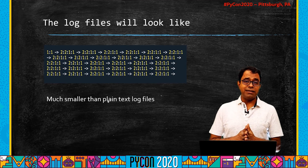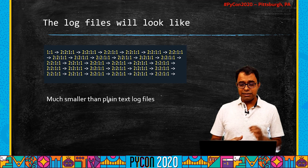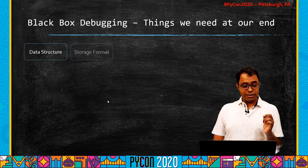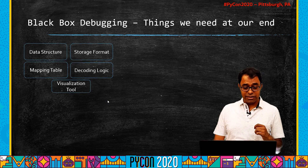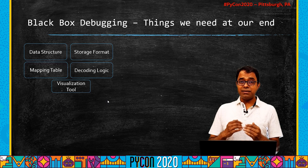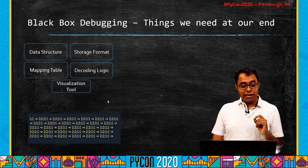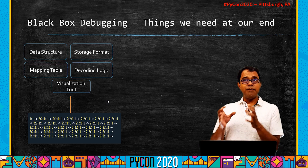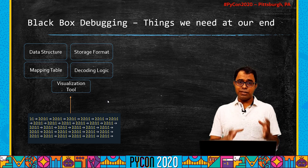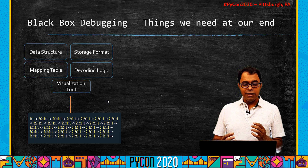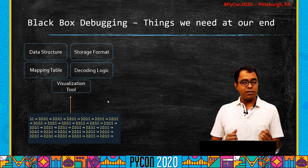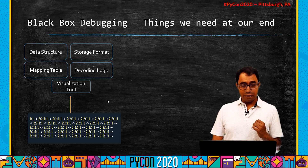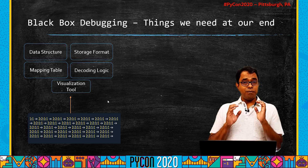But to do black box debugging, just generating logs is not enough. We need a complete infrastructure: data structures, storage format, mapping table, decoding logic, and a visualization tool — basically a complete system where we feed in logs and get sequence and activity diagrams out. It was complex but a one-time job; we needed to build something to make sense of the logs, since manually decoding them is very difficult.